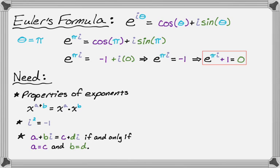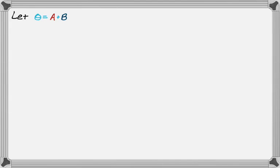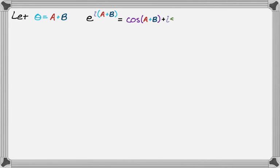We're going to use all of that to arrive at the formulas. First, we let theta equal a plus b and apply Euler's formula to get e to the i times the quantity a plus b, which equals cosine of a plus b plus i times sine of a plus b. Everything we do next will focus on the left-hand side, leaving the right-hand side for now.